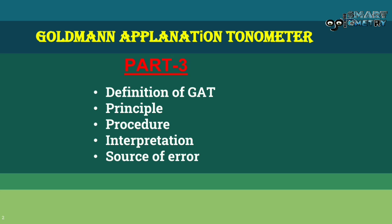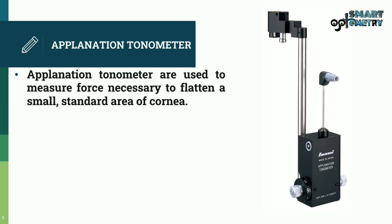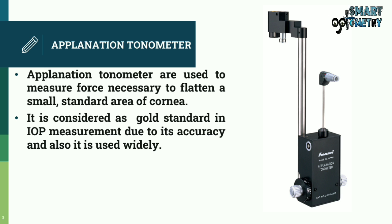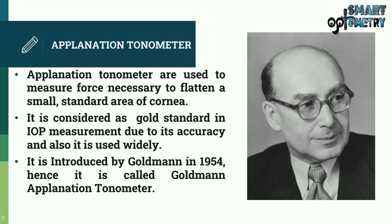Applanation tonometers are used to measure the force necessary to flatten a small standard area of the cornea. It is considered the gold standard of IOP measurement due to its accuracy and wide use. It was introduced by Goldman in 1954, hence it is called the Goldman Applanation Tonometer.